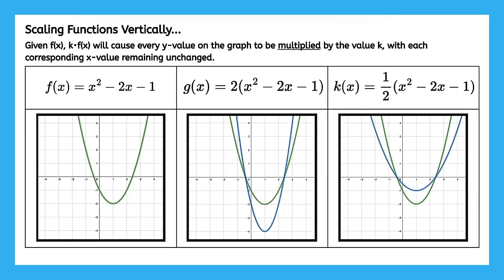How do we scale functions vertically? This description is going to look kind of crazy at first, but then we'll break it down. So it says given f of x, k times f of x will cause every y value on the graph to be multiplied by the value k, with each corresponding x value remaining unchanged. But what is this really saying?